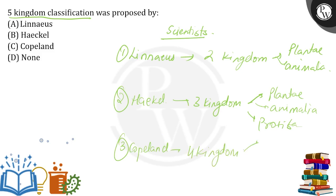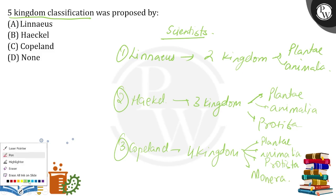Herbert Copeland proposed four kingdom classification, saying three are not enough. He included Plantae and Animalia, already had Protista, but then also addressed those prokaryotic, very microscopic organisms — the bacteria — and categorized them into Monera.